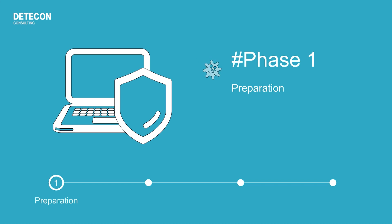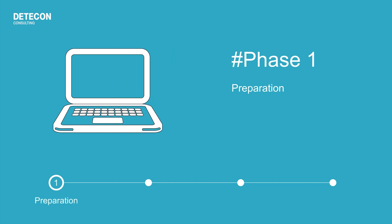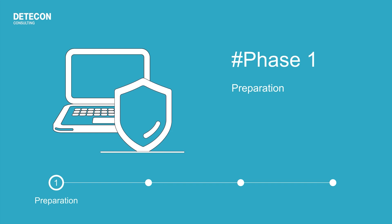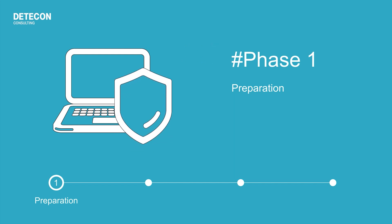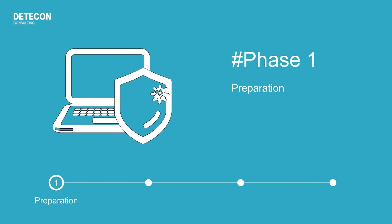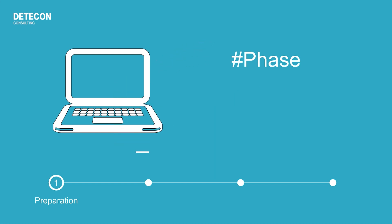The preparation phase is the foundation for an effective incident response capability. This includes activities such as forming an incident response team, defining incident response policies and procedures, developing an incident response plan, establishing communication channels and conducting training and exercises to enhance readiness.